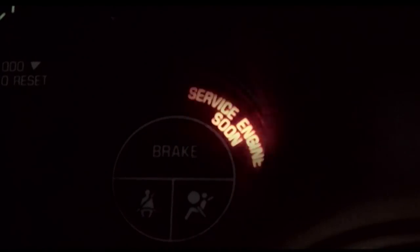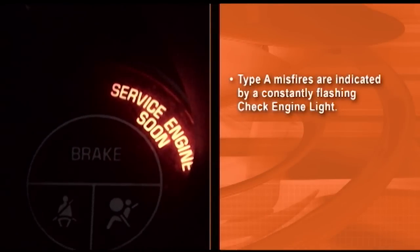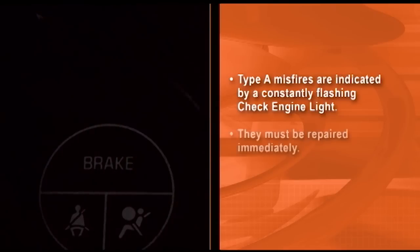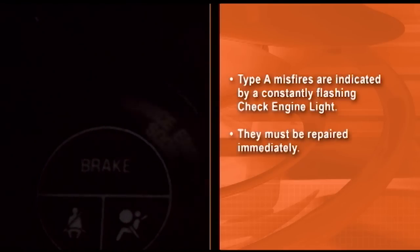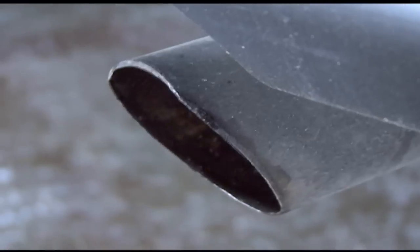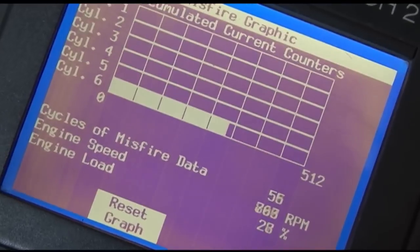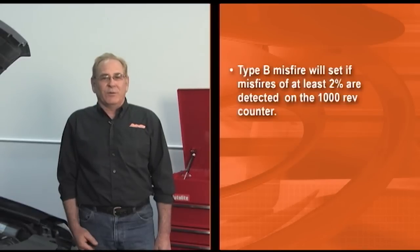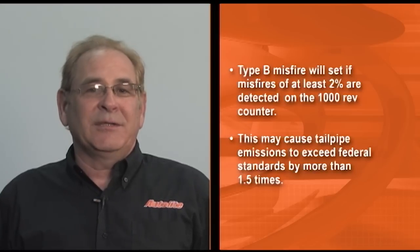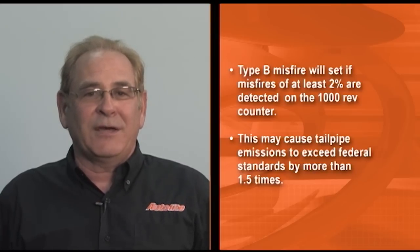There are two types of misfires, type A and type B. With a type A misfire, the check engine light will constantly flash. This type of misfire can potentially damage the catalyst and must be repaired immediately. A flashing check engine light indicates that the vehicle is experiencing a constant misfire, and the driver will usually feel this as well because the engine will run roughly. Type A misfires will readily count up on the 200 rev counter in scan data. A type B misfire will set if misfires of at least two percent are detected on the 1000 rev counter. This may cause tailpipe emissions to exceed federal standards by more than one and a half times, and the check engine light will be lit though the car may or may not run poorly.